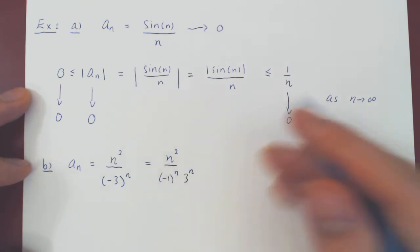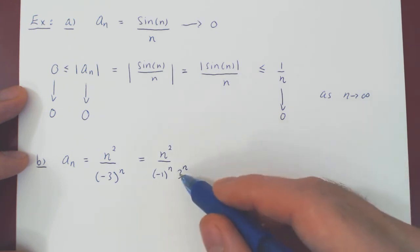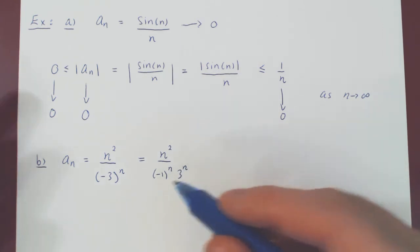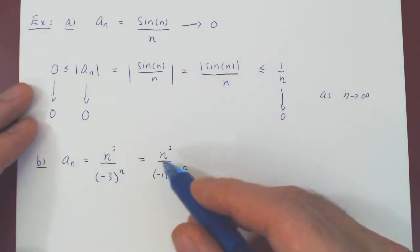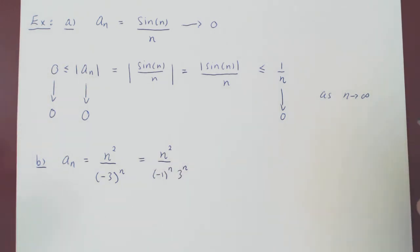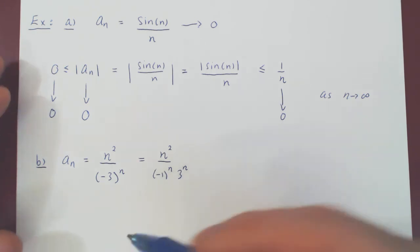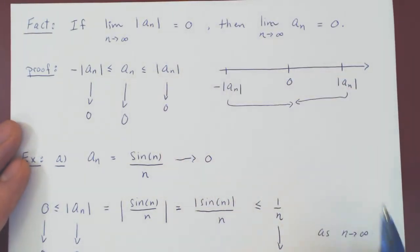And if you think of what kind of case you're in here, well, n squared will go to infinity, 3 to the n will go to infinity, but negative 1 to the n will give you positive, negative, positive, negative forever. So you couldn't just use here L'Hôpital's rule because of this oscillation. The idea is, well, if an oscillation between positive and negative creates a problem, we can get rid of it, of course, by taking the absolute value.